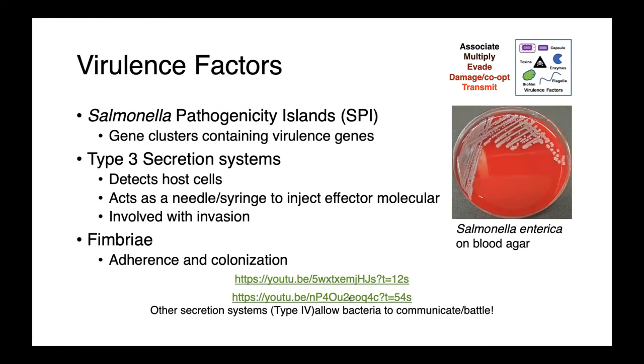The virulence of salmonella has been really well studied. Clusters of virulence genes are found on salmonella pathogenicity islands, and virulence factors include type 3 secretion systems — a needle and syringe-like apparatus the bacteria produce to inject effector molecules. They detect host cells and are involved with evasion. Also important are fimbriae, which are important for attachment and colonization. These secretion systems play a role not only in pathogenesis in people, but also in microbe-microbe interactions.